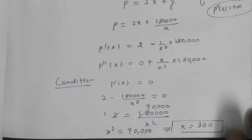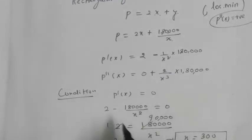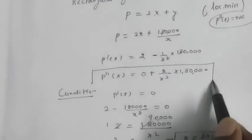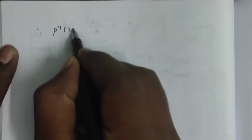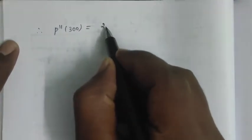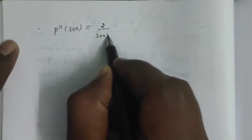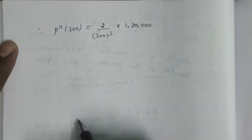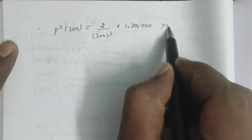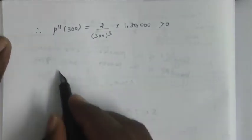For second order derivative, P''(300) = 2/(300)³ × 180,000, which is greater than 0. Hence, the perimeter is minimum.